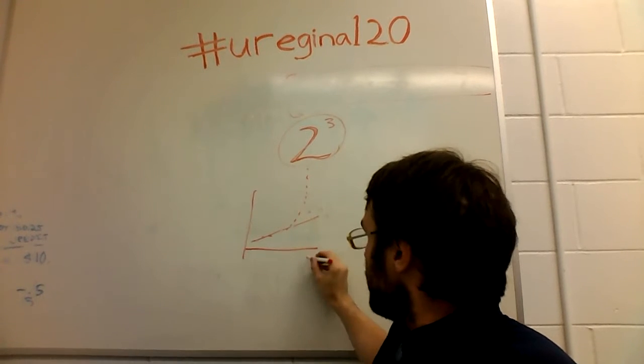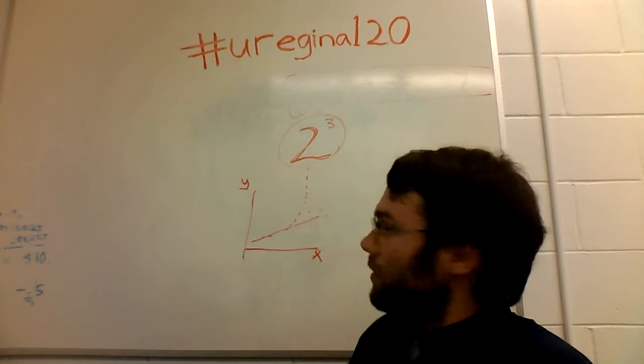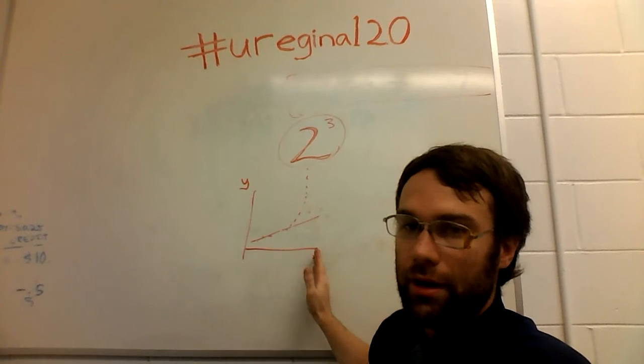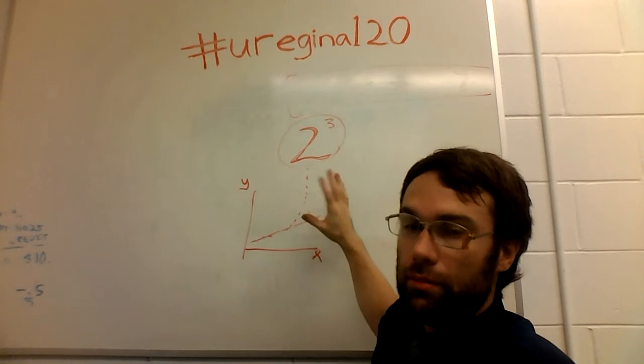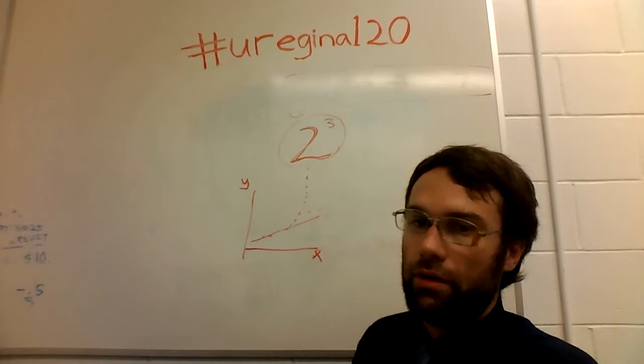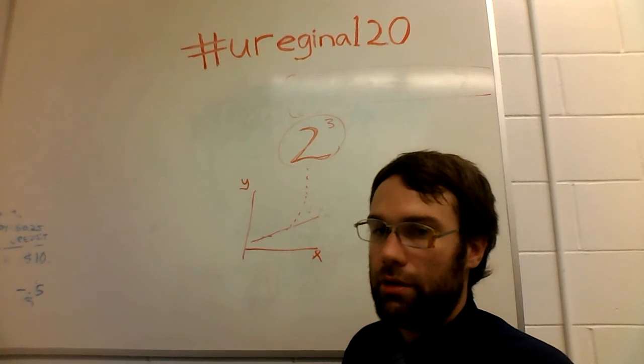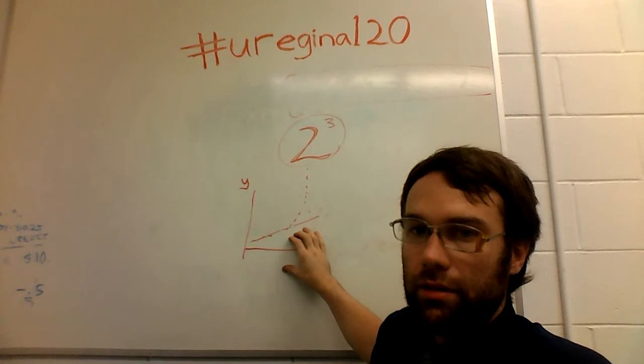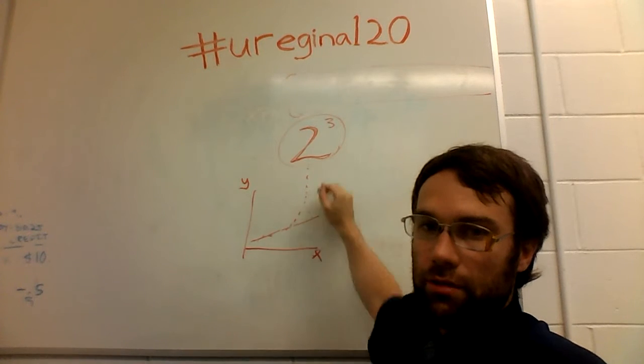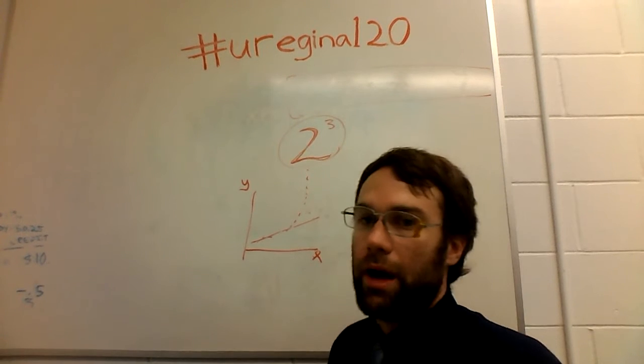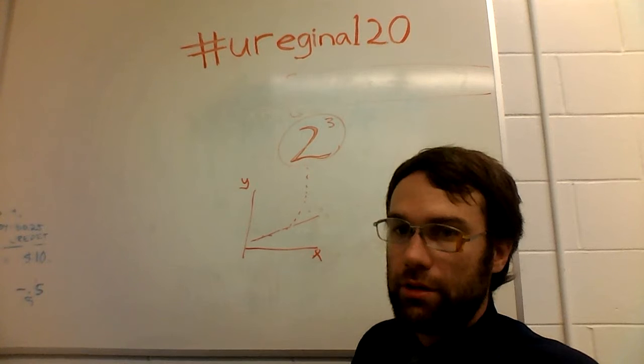And then over here, as your x starts to increase, your y increases a lot more than you would expect given the beginning of your sequence or your series. And you're left with a projection that is not even close. And so this happens all the time with exponential functions.